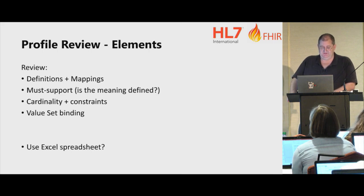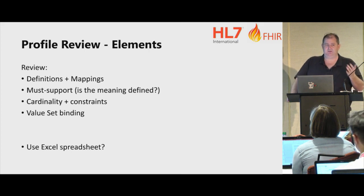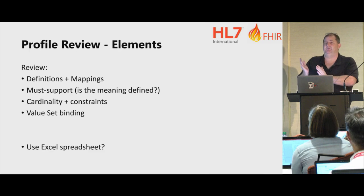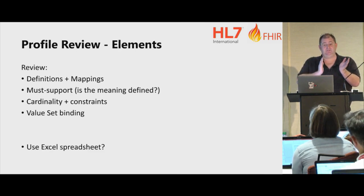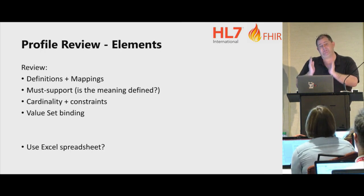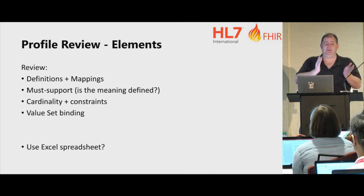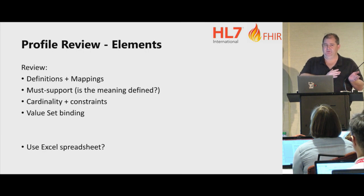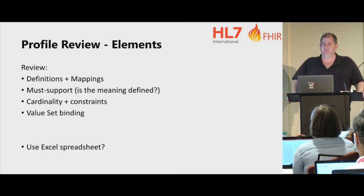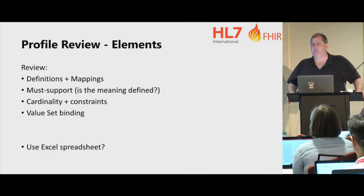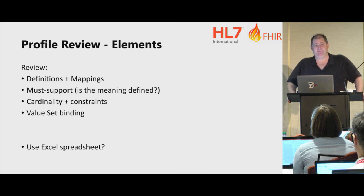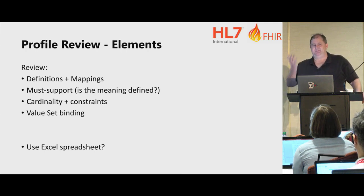Or you might mean that if an application receives a resource with that element populated, the application must display it. The definition of must support is really clear: you can't use it unless you explain what you mean by using it. So you should check — if an implementation guide labels something as must support, you can reasonably expect it to explain what that means. If it doesn't, you ballot that automatically. Check the cardinality and the constraints — many people reviewing a guide get confused between minimum cardinality zero and must support. They mean different things. Cardinality zero means it doesn't have to be present; cardinality one means it has to be present. Must support means you have to put it in if you have it and other rules are satisfied, but there are valid cases where it doesn't exist.